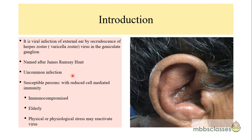There are certain groups of people who are more susceptible to develop the disease — those with reduced cell immunity. The first group is immunocompromised patients, seen in those suffering from cancer, undergoing radiation or chemotherapy. Elderly patients above 60 years of age are also susceptible, and stress — either physical or physiological — can sometimes reactivate the virus.